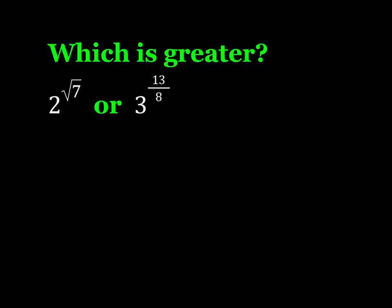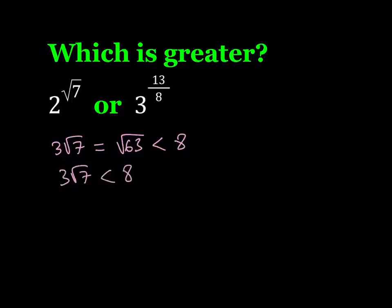Here's how we start. Notice that 3 times root 7 is equal to square root of 63, and that is less than 8 because the square root of 64 is equal to 8. This gives us that 3 root 7 is less than 8.